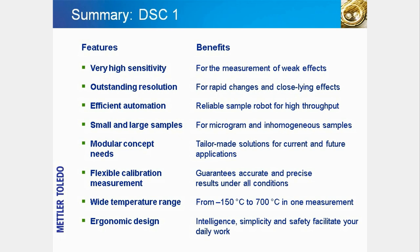This slide summarizes the features and benefits of the DSC-1. The Mettler Toledo DSC-1 measures heat flow very reliably with optimum resolution and sensitivity so that even the weakest effects can be measured. For high throughput applications, a sample robot allows easy automation of entire sample series, and even different types of crucibles can be measured with individual temperature programs. Because of its modular concept, options such as sample changers or cooling devices can be added later. Flexible calibration procedures allow the instrument to be calibrated and adjusted over the entire temperature range from minus 150 to plus 700 degrees Celsius.